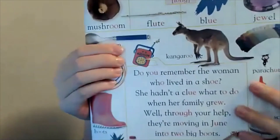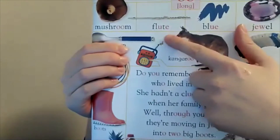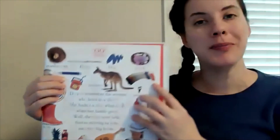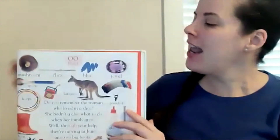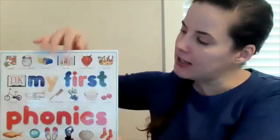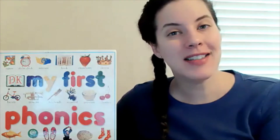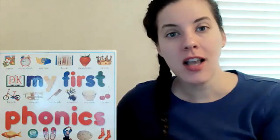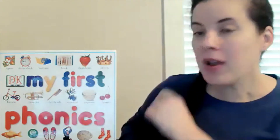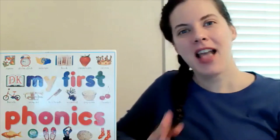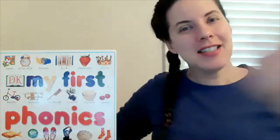Usually the long double-O sound is made by two O's together, a U-consonant-E, a U-E together, or an E-W. Thank you so much for joining us on our phonics lesson for the long double-O sound! I hope you have an amazing day. Try to practice — write 10 words with the OO sound using double O, U-consonant-E, U-E, or E-W. You can do it! Up, down, wiggle wiggle, pop — love you guys, bye friends!